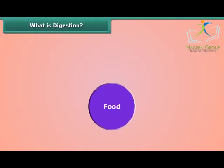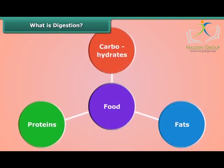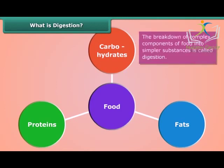We all know food is made up of complex substances like carbohydrates, fats, and proteins. We cannot utilize these substances as such, so they are broken down into simpler substances. The breakdown of complex components of food into simpler substances is called digestion. Let us study digestion in human beings.